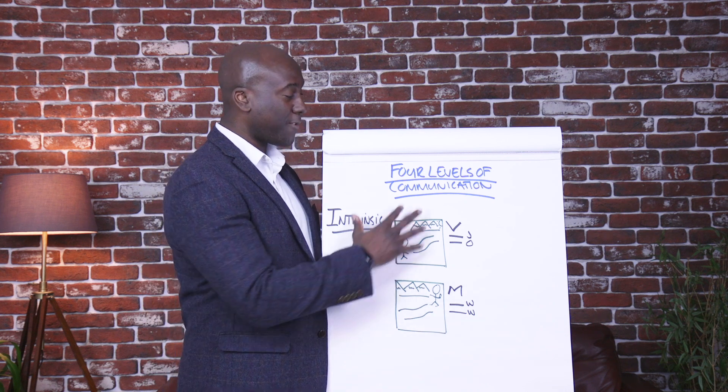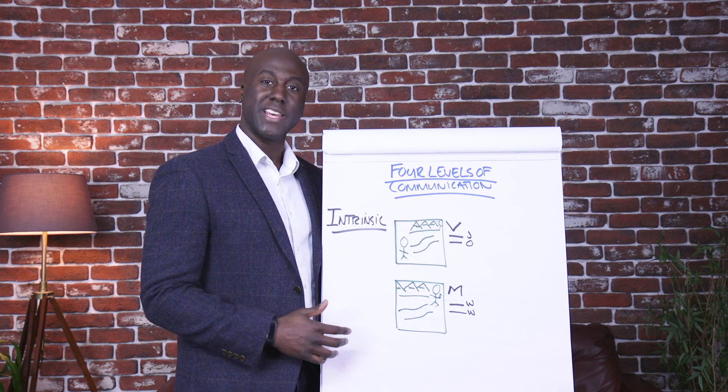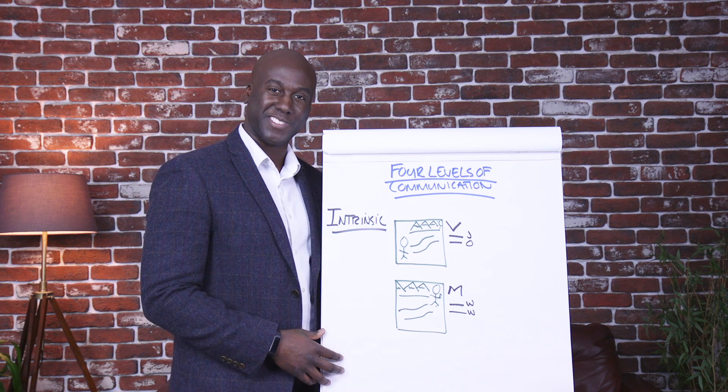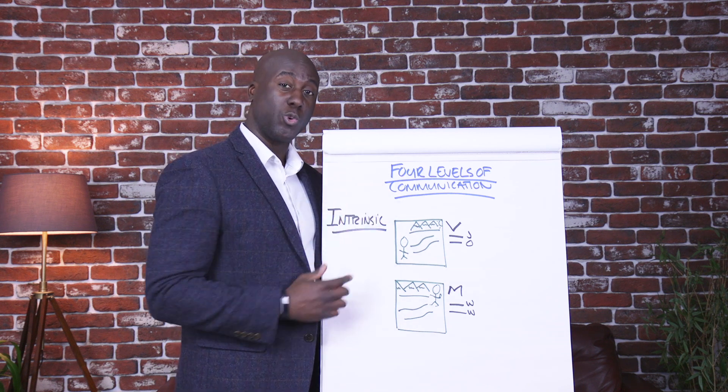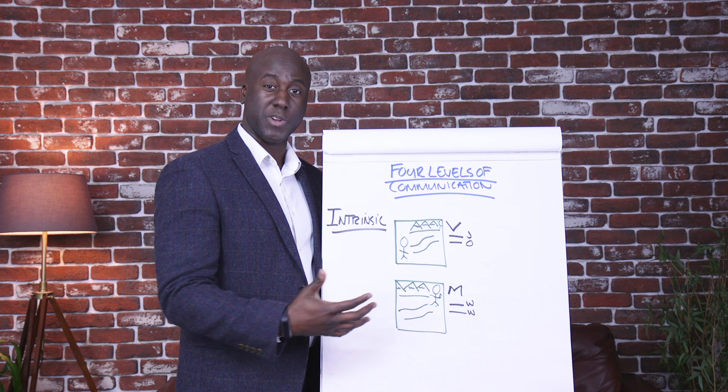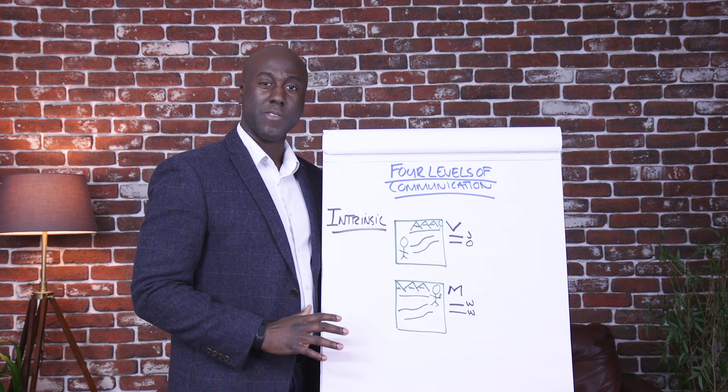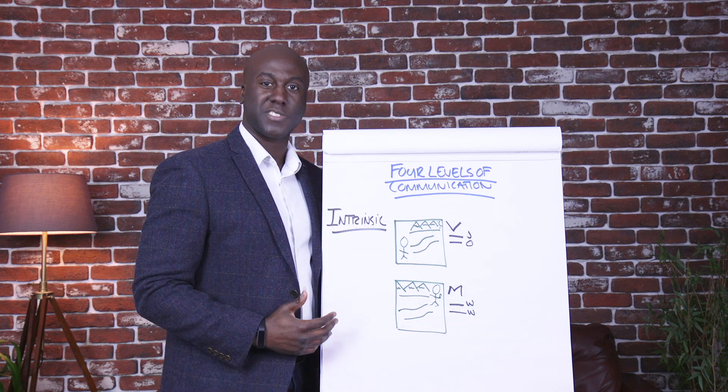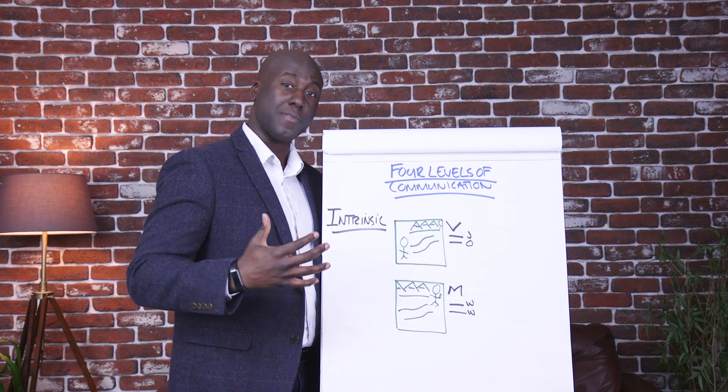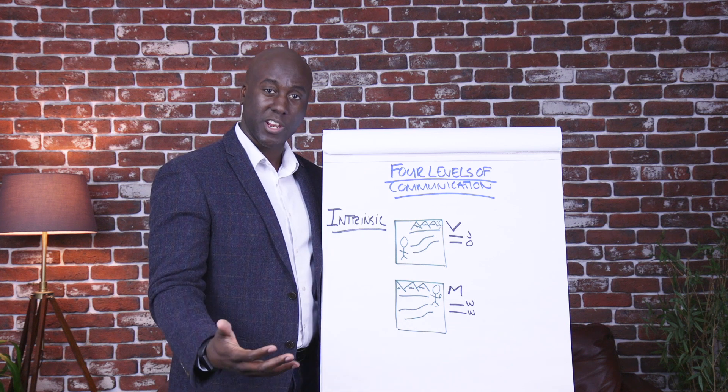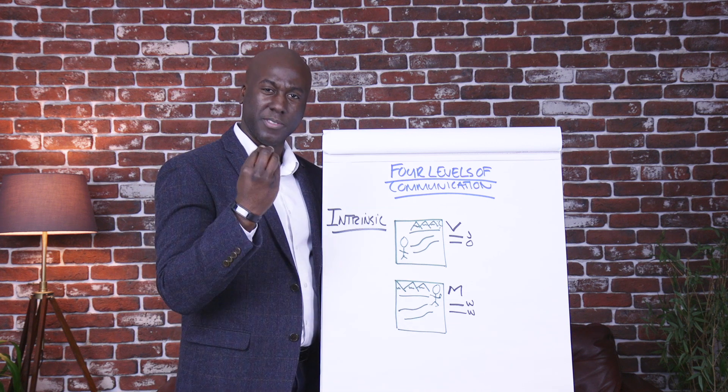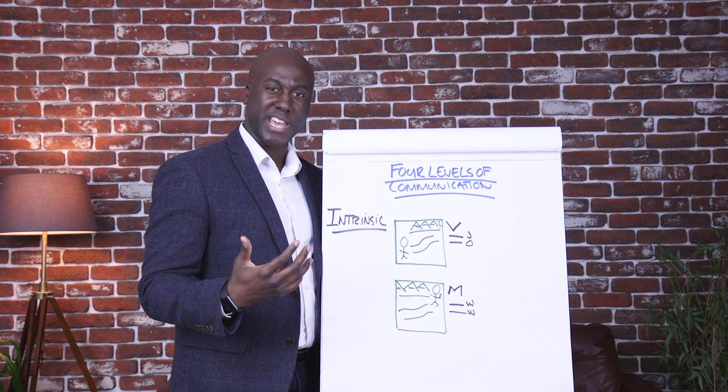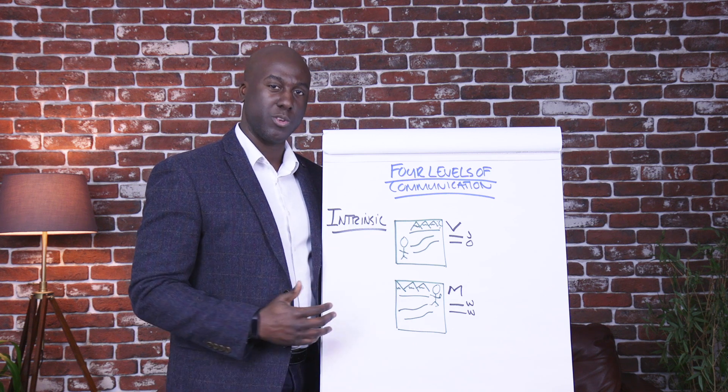We're in video number two of four levels of communication in the Customer Mastery Series. In video number one, we talked about extrinsic communication, which is the outward areas that we focus on, the execution and the expectations of teams and customers and customers of us, and how that's really important to focus on the different areas in which we communicate that and how well we do those things.